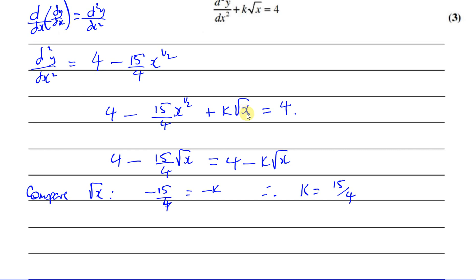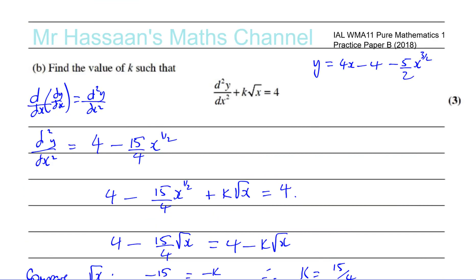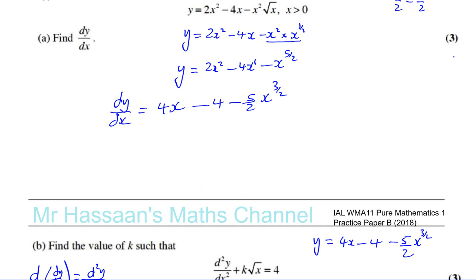That's the easiest way to do it — just by comparing. Both equations have a 4 and a root x term. Minus k must equal minus 15 over 4, so k is 15 over 4. And there we have the answer to that part — parts (a) and (b) are done.